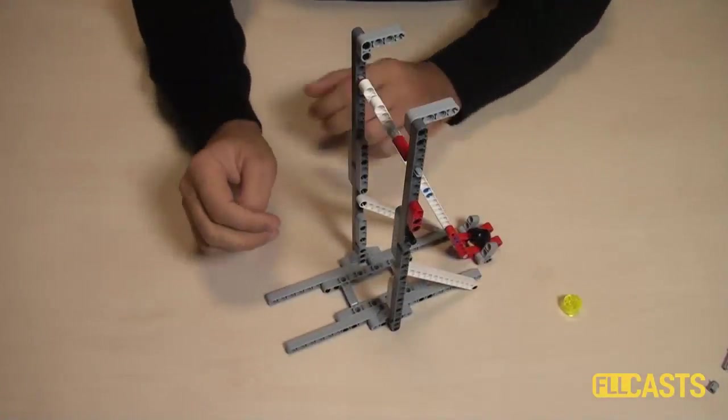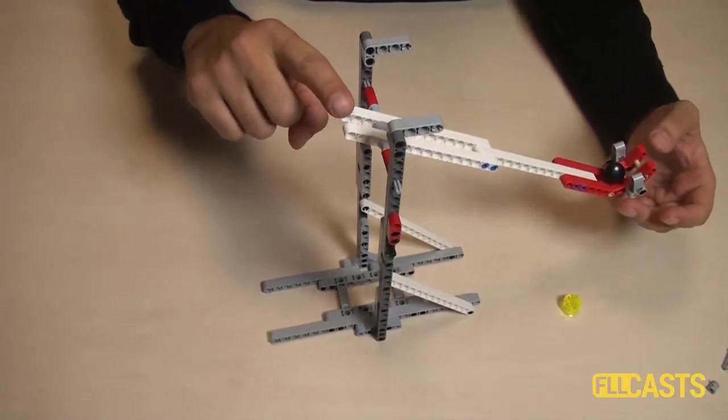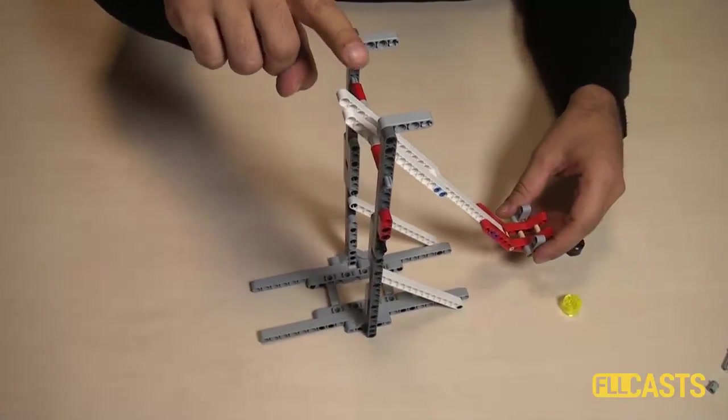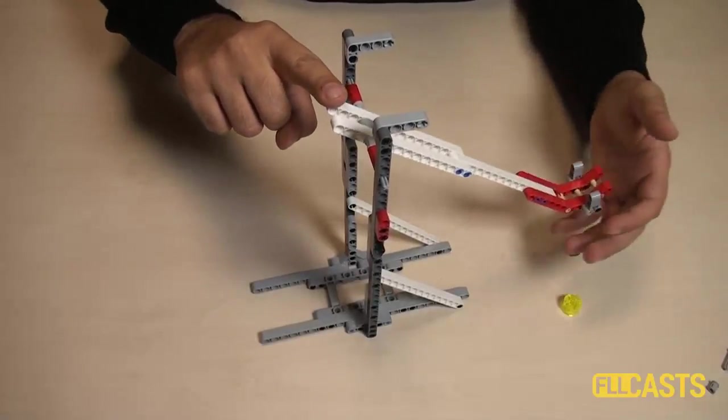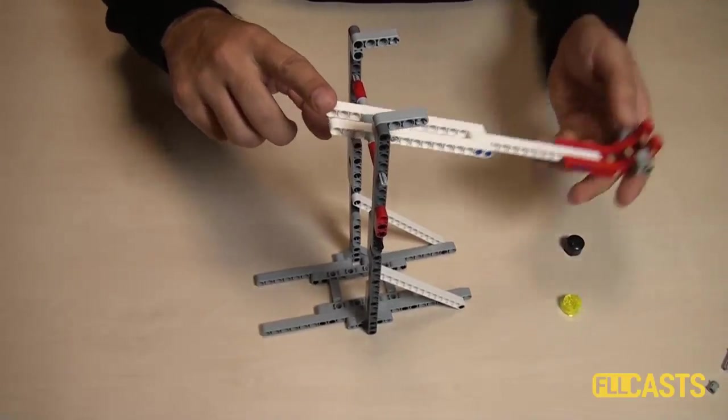The last step of building our catapult is to find something heavy that we can attach at this end of the lever. And when we press probably a button or something it will lift the lever and fire the part.